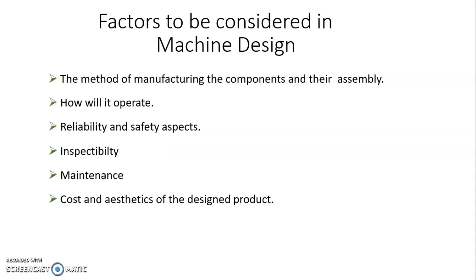When moving toward manufacturing capabilities, we must know what manufacturing facilities are available. After considering manufacturing facilities, we must think about how the product is going to operate. Reliability and safety aspects are also critical — the product should be reliable and must conform to safety standards.